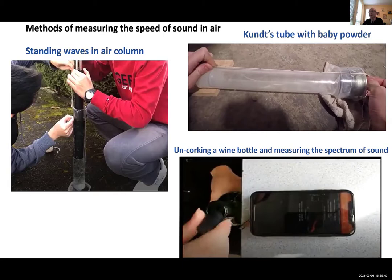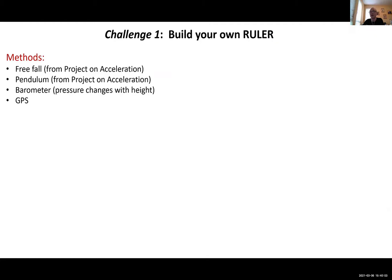If you uncork a wine bottle and use a spectrum analyzer — which PhyPhox has — you can immediately see the spectrum of sound from the bottle, those harmonics. Treating the wine bottle as an air column, you can calculate the speed of sound right there. There were also two sub-challenges: rulers were not available, so students had to create their own, and they had to measure temperature to scale results to zero degrees centigrade.